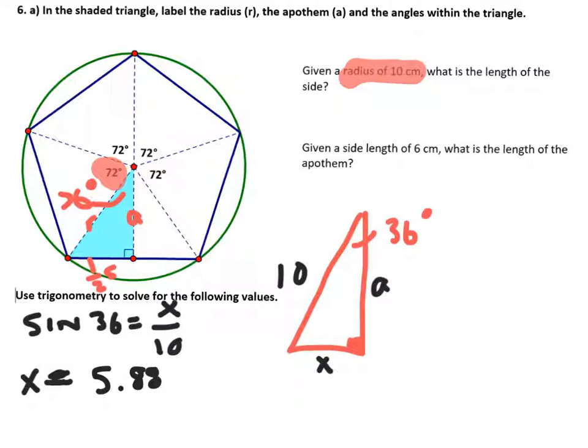And so that's going to operate that value. And then I'm going to do cosine as well. So let's do cosine of 36 is a over 10, the apothem. And here we're going to get a to be approximately 8.09 looks like.